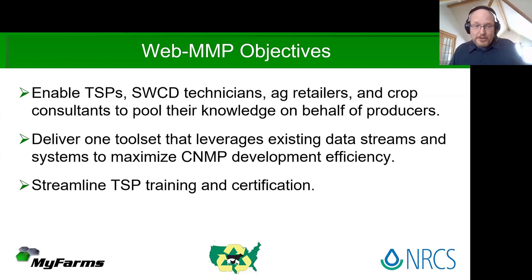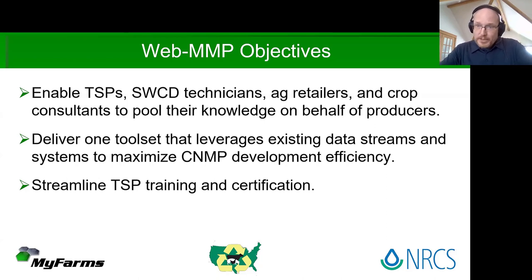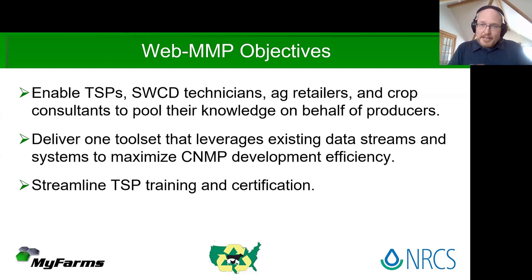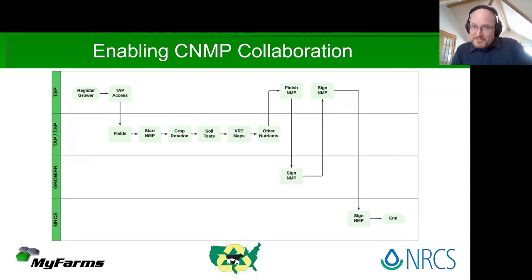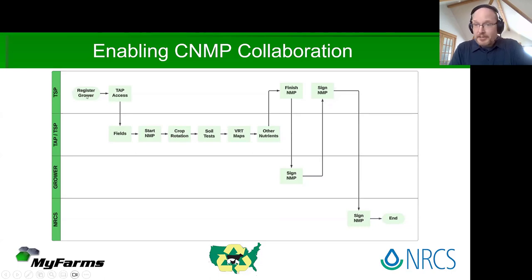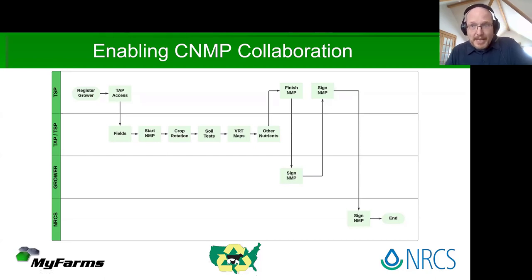A big part of the goal is to bring efficiency into the whole process, but also to make sure TSPs can become trained and certified much more quickly because the tools they're using are much simpler and built specifically for ease of use. This outlines the handoffs happening now in Ohio between technical service providers certified by NRCS to write CNMPs. They'll start by registering the grower, then register a technical assistance provider — a TAP — and with the grower's permission, grant the TAP access to contribute their pieces of the puzzle.